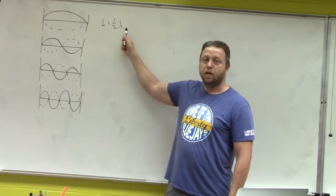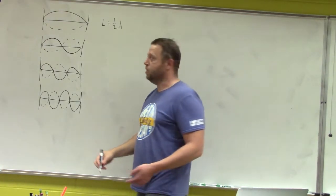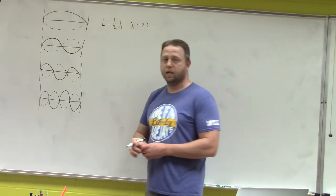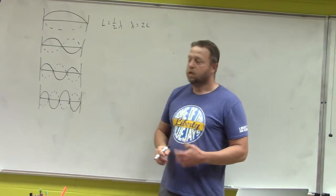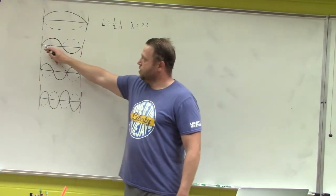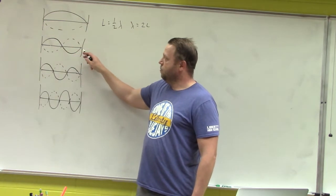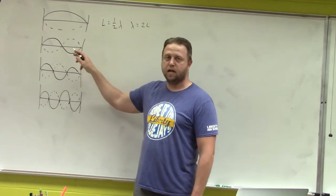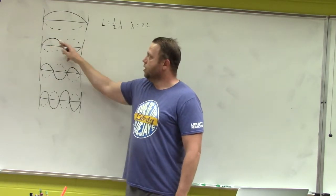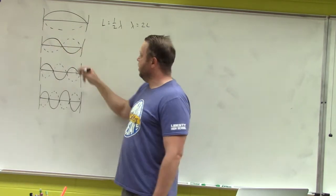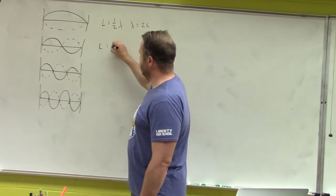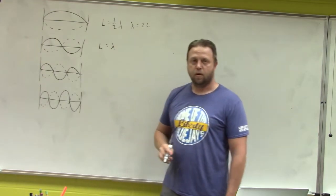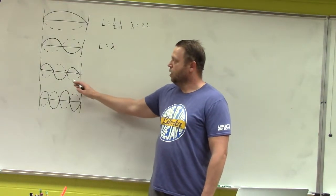So L equals one-half lambda, meaning lambda equals two times the length of the string. Going down to the second waveform, this is a perfect sine wave — you have your reflected wave coming back through, making one complete wave cycle. This one is easy: length equals the wavelength, so L equals lambda.